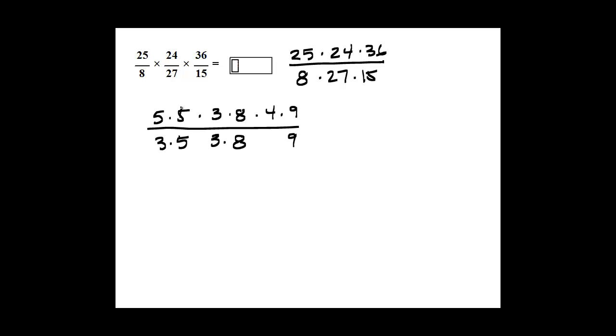And you can see that I have 5s that cancel to 1, 3s that cancel to 1, 8s that cancel to 1, and 9s that cancel to 1.